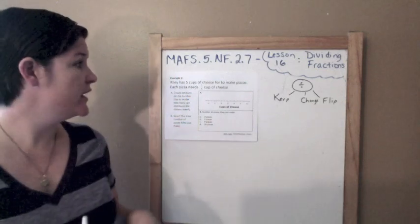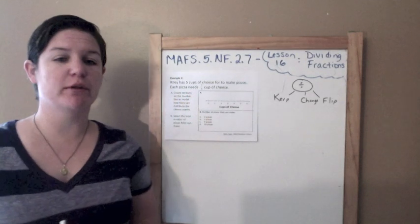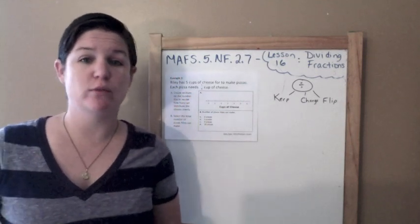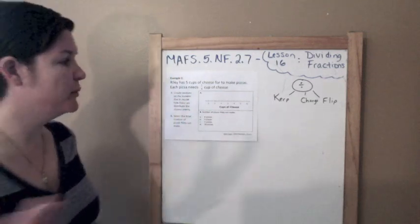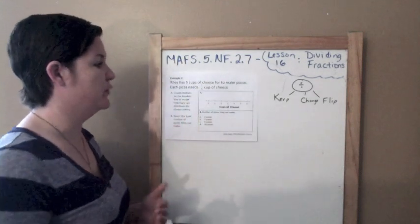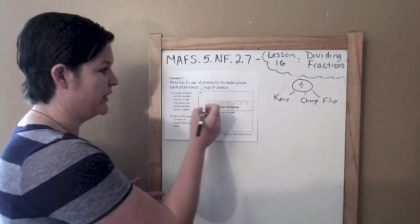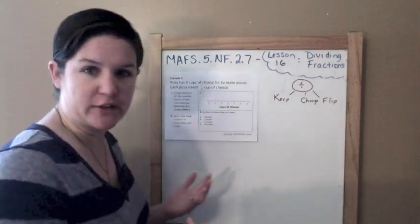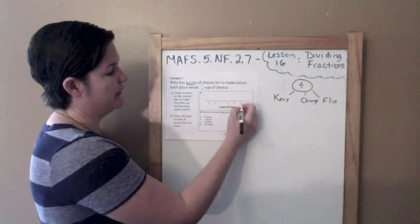Example 2: Riley has 5 cups of cheese to make pizzas. Each pizza needs 1/2 cup of cheese. Part A says: create sections on the number line to model how Riley can distribute the cheese evenly. Part B says: select the total number of pizzas Riley can make. Since yours is a computer-based test, I'm not exactly sure what it would look like when you click on it — whether a line or a dot would appear. Today I'm just going to use dots. She has 5 cups, so 5 cups of cheese is where I need to go.